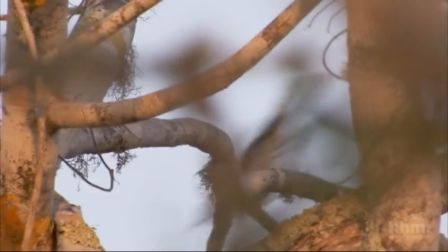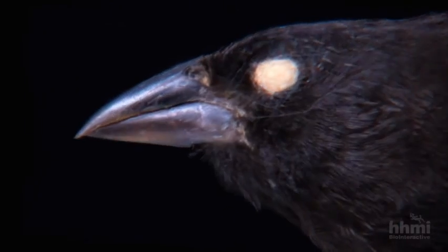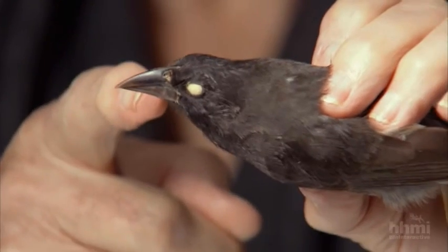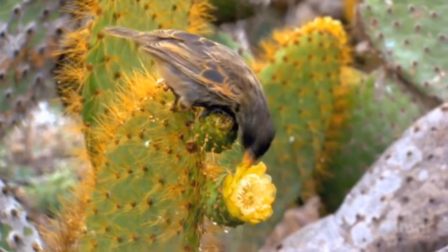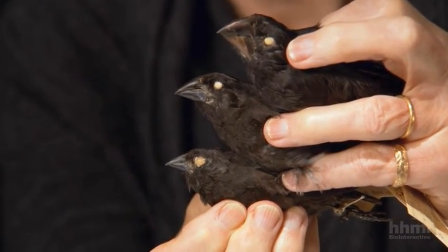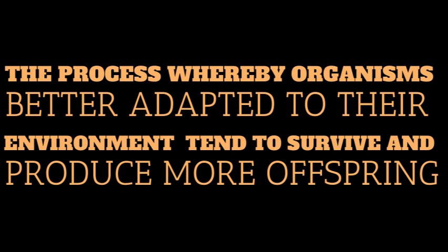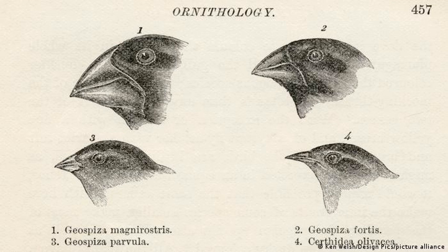For instance, the beaks of the island finches varied greatly despite their similar color and size. On one island the finches had long, sharp beaks; on the next, short, blunt beaks; on another, small, thin beaks. Darwin saw these physiological differences and coined the term natural selection to explain how these adaptations came to be — the process whereby organisms better adapted to their environment tend to survive and produce more offspring. These finches became the catalyst of Darwin's theory of evolution by means of natural selection.